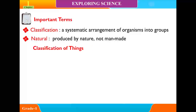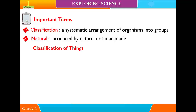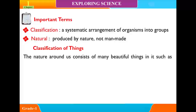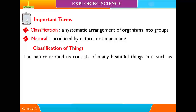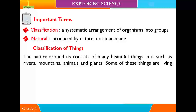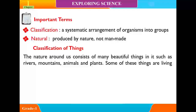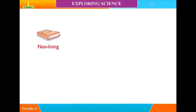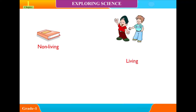Classification of Things: The nature around us consists of many beautiful things, such as rivers, mountains, animals, and plants. Some of these things are living and some others are non-living.